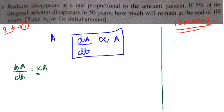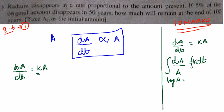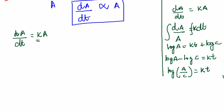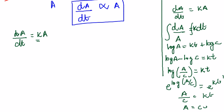Let me do some rough work here. If dA/dT is equal to K into A, I am going to bring all the A's to one side and take the dT to the other side, so it is K dT. Now, you integrate on both sides, you get log A is equal to KT plus log C. So, log A minus log C is equal to KT, and log A minus log C can be written as log of A/C is equal to KT. Therefore, if I want to remove the log, I write it as e^(log(A/C)) is equal to e^(KT), and therefore A/C is equal to e^(KT), or A is equal to C·e^(KT).